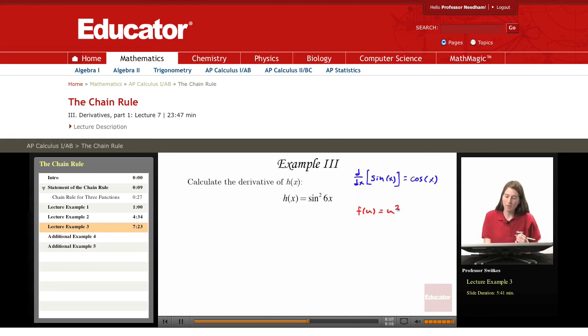And in this problem, we're actually going to have a composition of three functions. So we have a middle function here, which I'll write as g(v) = sin(v), and then the innermost function I'll write as j(x) = 6x.